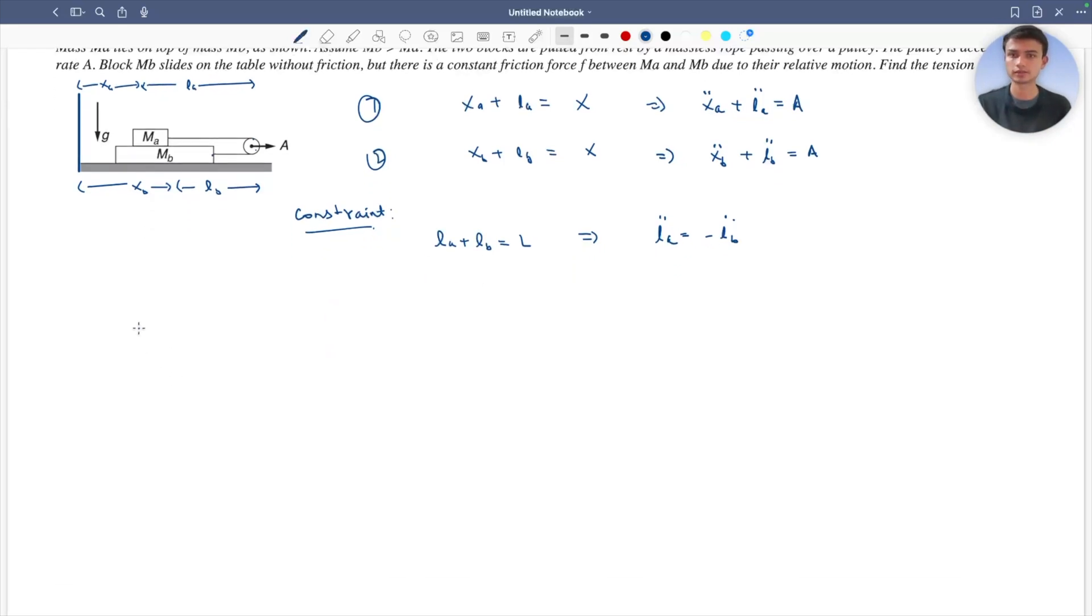Now let's make the free body diagrams for ma. This is ma, with tension, frictional force, mag downward, and normal force upward. So ma xa double dot equals tension minus frictional force, my first equation.